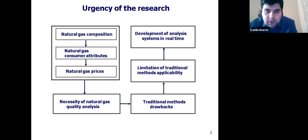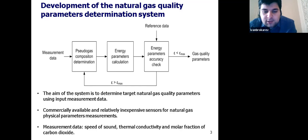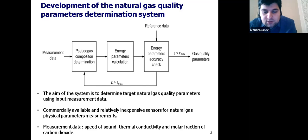In modern systems, statistical models are used to eliminate the limitations of traditional methods. The most important advantage is real-time operation. The developed system of natural gas quality analysis consists of three blocks, as shown on the slide. We suggest using commercially available and relatively inexpensive sensors for natural gas physical parameter measurements. The first block, called gas composition determination, is considered the main block of the system. Its task is to simplify the studied object and minimize the amount of measured physical parameters.